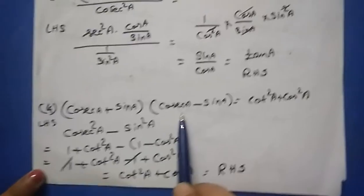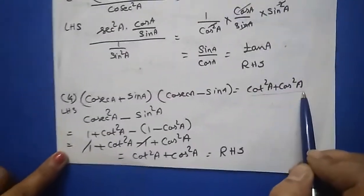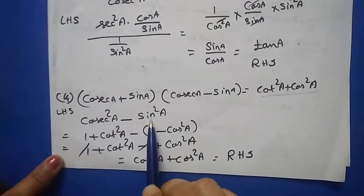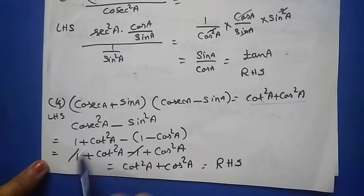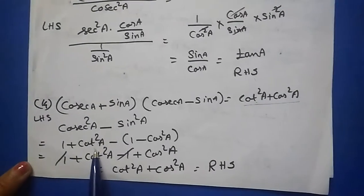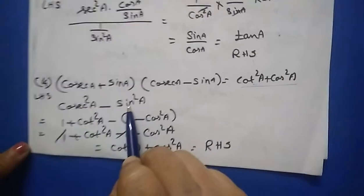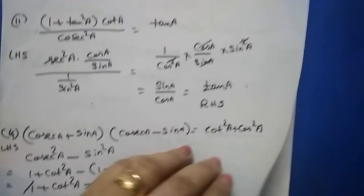For question 14, it is an (a+b)(a−b) form, giving cosec²a − sin²a. Looking at the right hand side, you want cot²a, so write cosec²a as (1 + cot²a). For sin²a, change it to (1 − cos²a) — remember the minus sign, so put a bracket. Remove the bracket: you get 1 + cot²a − 1 + cos²a = cot²a + cos²a, which is the right hand side.